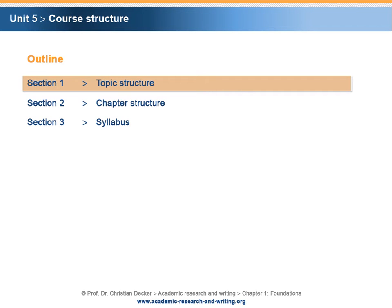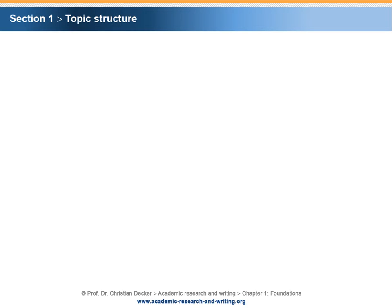Section 1 – Topic Structure. This course addresses Academic Research in Writing, which is a topic that encompasses a number of different aspects that can be found in a research project. Typically, the findings of a research project will be documented in a research report or a research paper.